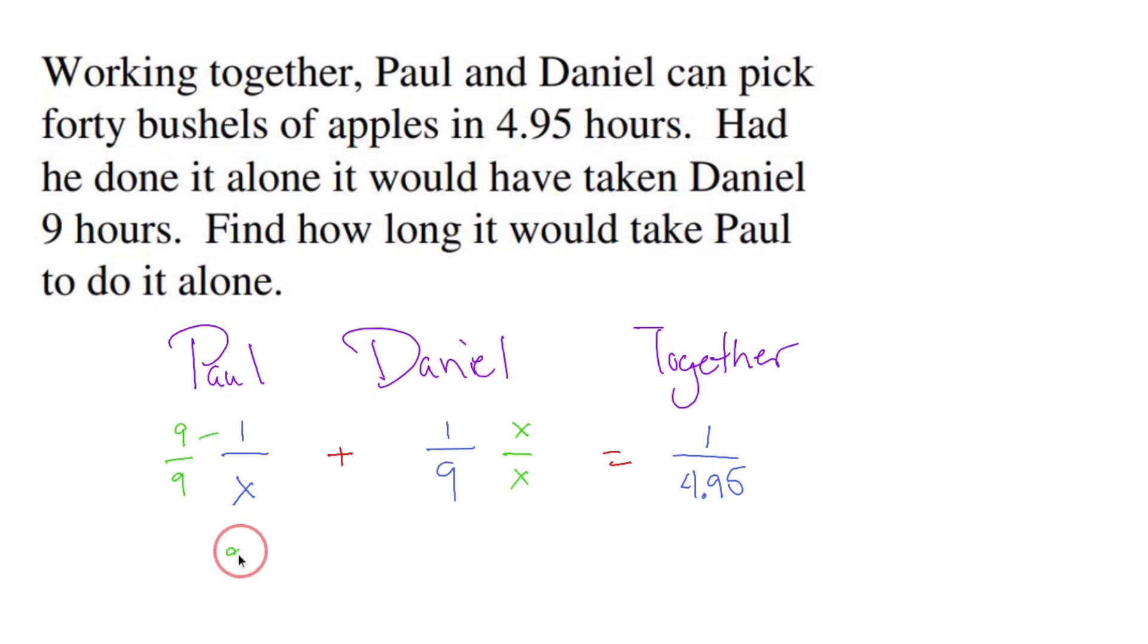That's going to give me 9 times 1 which is 9, 9 times x which is 9x, plus 1 times x which is x, 9 times x which is 9x, and that equals 1 over 4.95.